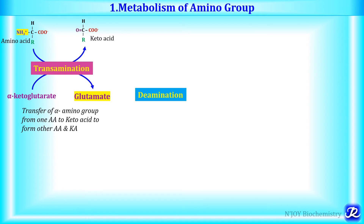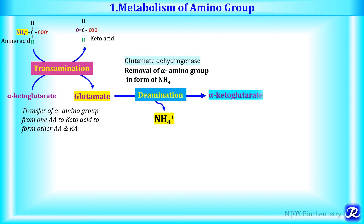The second process is deamination. The removal of amino groups from amino acids as a free ammonium ion is known as deamination. Note that transamination involves only the transfer of the amino group, while deamination removes the amino group as ammonia, leading to the formation of urea. Glutamate acts as a central molecule for both transamination and deamination. In oxidative deamination, the nitrogen atom in glutamate is converted into a free ammonium ion, and this reaction mostly occurs in the liver, leading to formation of alpha-ketoglutarate and free ammonium ion. Ammonia generation occurs through this deamination reaction.